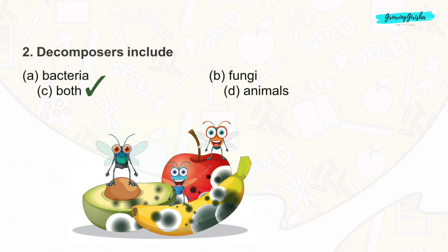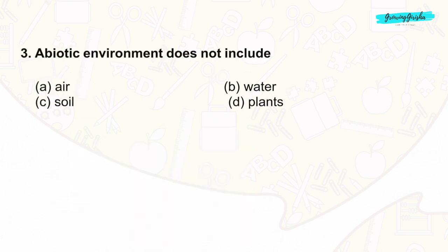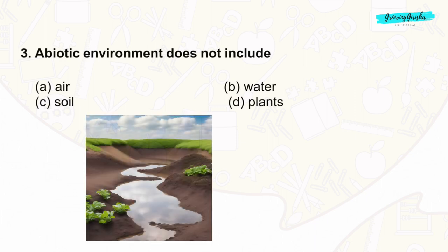Question 3: The abiotic environment refers to the non-living components of an ecosystem or habitat. It includes air, water, and soil. It does not include plants. The correct answer is option D.